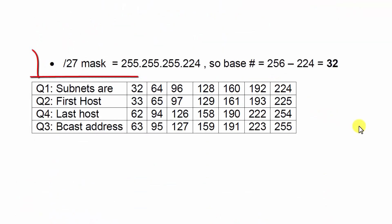First of all, you want to realize that slash 27 is 255.255.255.224, just in case you're not familiar with slash notation. I'm not going to explain it right here because this is strictly on subnetting, but you can always go back and look that up on the Internet. So, the base is 256 minus 224, which is 32.